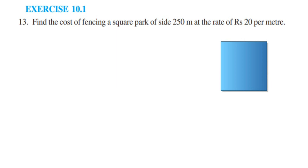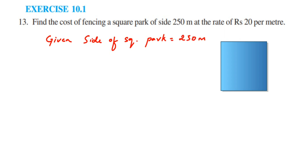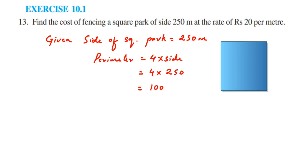First we're going to find out the perimeter, then we'll find out the cost. The side of the square park is equal to 250 meters. Perimeter = 4 × side = 4 × 250, which equals 1000 meters.